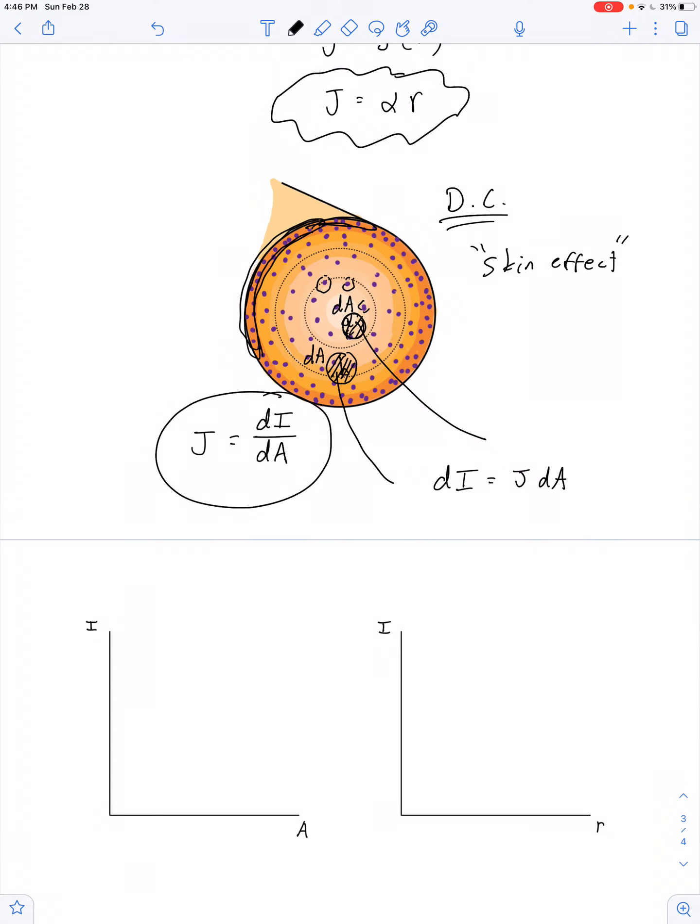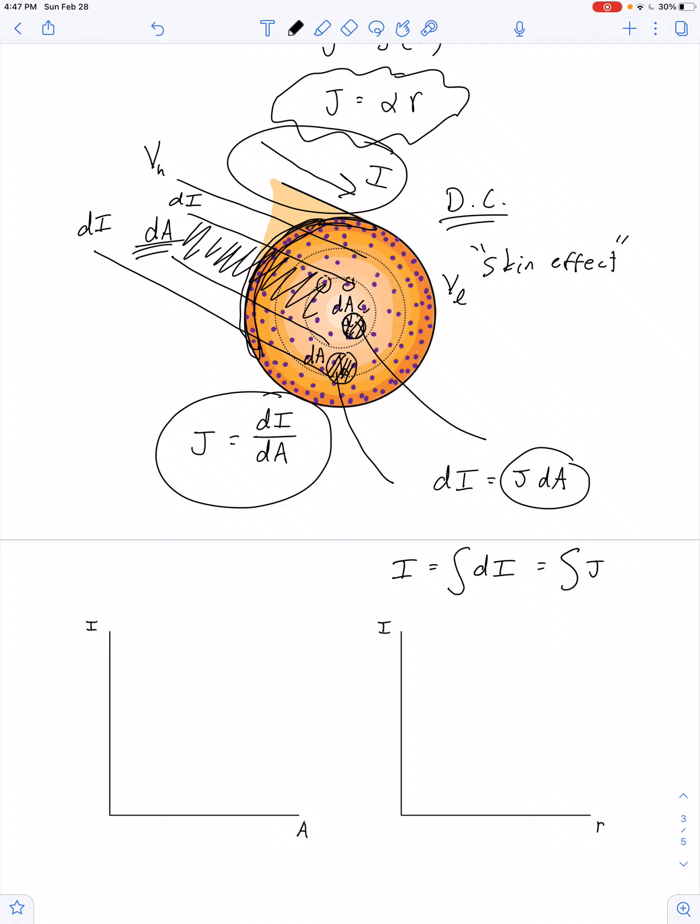So, if I want to know, for example, what fraction of the total current, right, we've got a total current, capital I, flowing to the right in this wire, if this end is high potential, and this end is low potential, what fraction of that current flows through this fractional cross-section? Well, it would just be equal to J times that dA. And if I want to get the total amount of current, then I have to add up this additional amount. So, to say I'm going to add up all the contributions to the overall current, I can say the total current is just the summation of all the contributions to the current, which in turn is the integral of J dA.